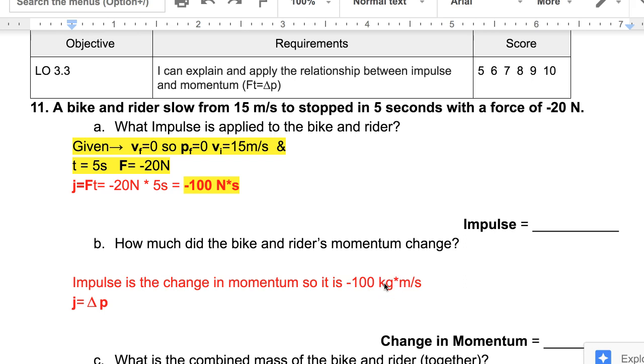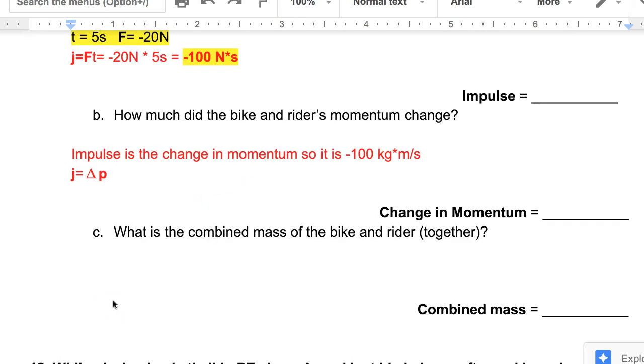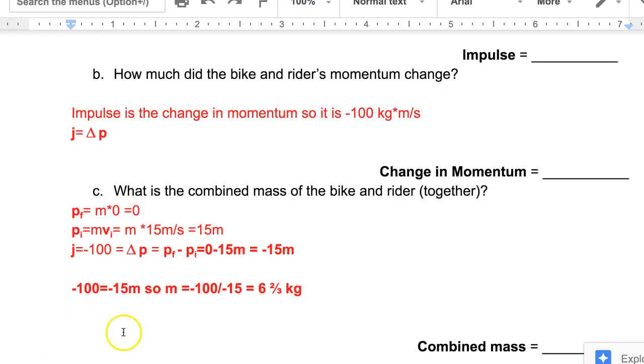Now, what is the combined mass of the bike and the rider together? We know the impulse. We don't know their mass together. But we have a lot of the pieces along the way. We know their velocity, their final velocity, and their initial velocity. Let's look at how we could possibly solve this. The final momentum of the bike and the rider is zero because they came to a stop. So their mass times zero. Whatever that value of their mass was, it becomes zero when multiplied by a velocity of zero. Their initial momentum, though, was not zero.